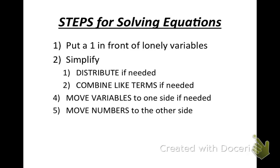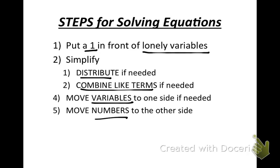Here are some steps you can go through when you've got variables on both sides. First, look for lonely variables — ones that don't look like they have a coefficient. They actually do have a coefficient of 1, so write that in to remind yourself. Then look at each side of the equal sign separately and simplify: distribute if you need to, combine like terms if you need to. Then start the serious solving — move the variables or collect them on one side of the equal sign. Then move your numbers to the other side, variables first. Finally, undo the math to solve the equation.